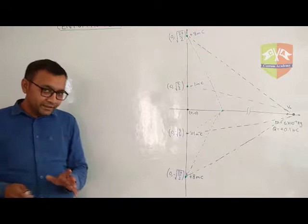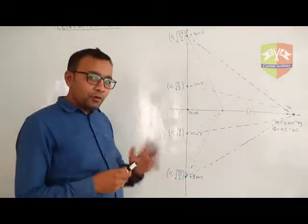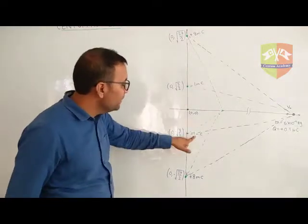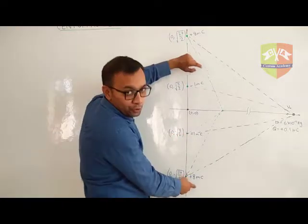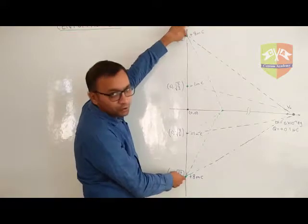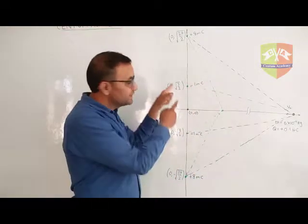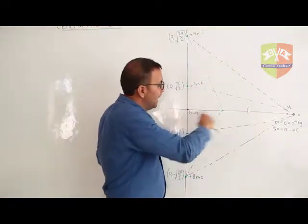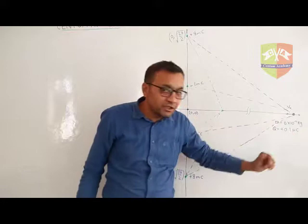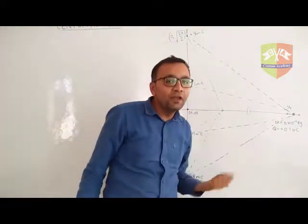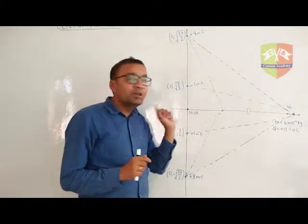Here is another problem that tests the concept of conservation of energy in electrostatics. You have minus one milliCoulomb charges placed at two locations and plus eight milliCoulomb two charges placed at those locations. This is your y-axis and that is your x-axis. These charges are placed symmetrically across the x-axis, and there is a charge of given mass coming from infinity with velocity v₀. We have to find the minimum velocity v₀ for it to cross the origin.